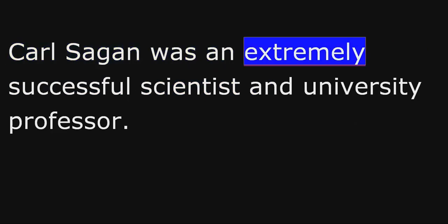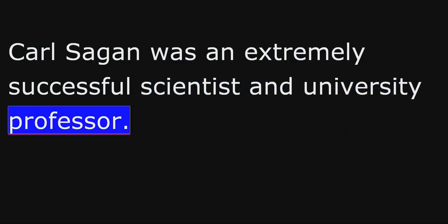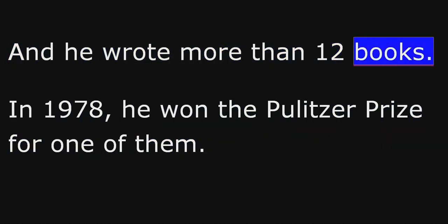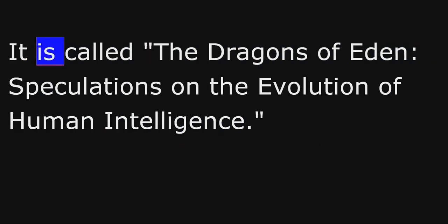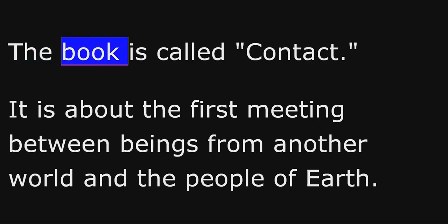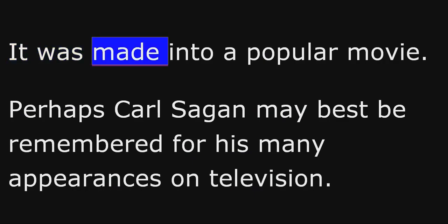Carl Sagan was an extremely successful scientist and university professor. He was also a successful writer. He wrote more than 600 scientific and popular papers during his life. And he wrote more than 12 books. In 1978, he won the Pulitzer Prize for one of them. It is called The Dragons of Eden, Speculations on the Evolution of Human Intelligence. He even helped write a work of science fiction in the 1980s. The book is called Contact. It is about the first meeting between beings from another world and the people of Earth. It was made into a popular movie.